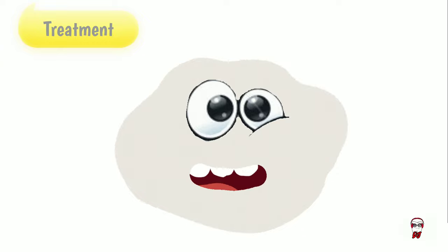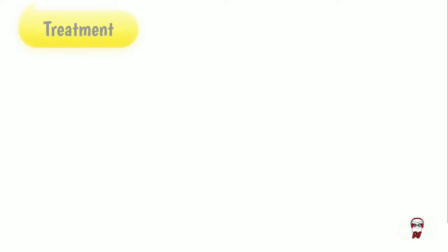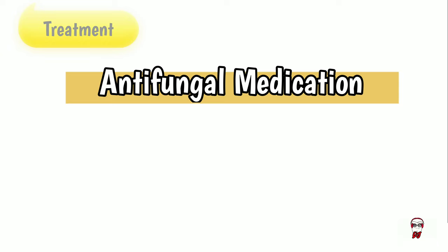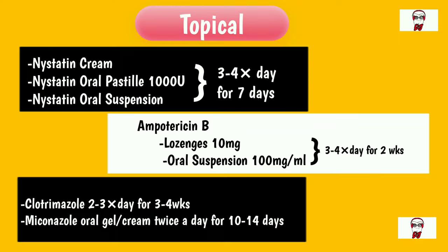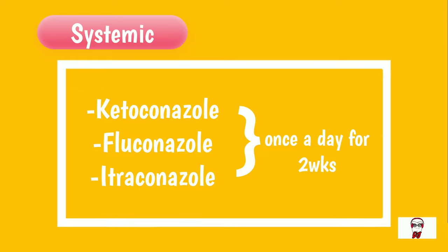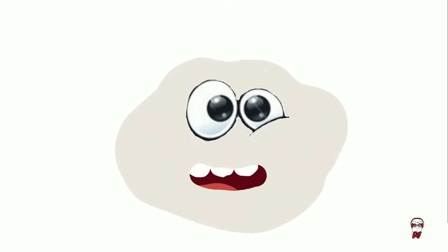So how would you treat an infection such as myself? Well, I am a fungal infection, so the use of antifungal drugs could help. Antifungal drugs are subdivided into topical and systemic. Topical drugs include nystatin, amphotericin B, clotrimazole, and miconazole. The systemic drugs include ketoconazole, fluconazole, and itraconazole. Use any one of these drugs and I'll start screaming like the wicked witch of the west!